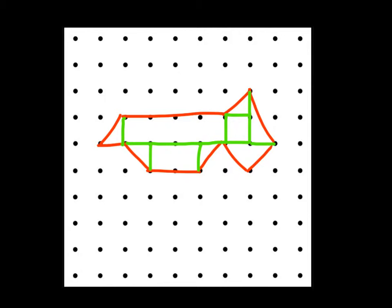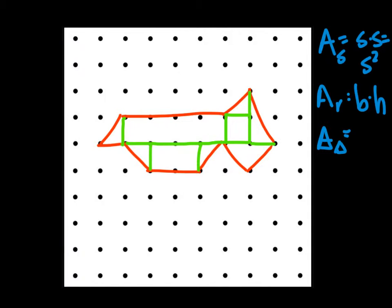So if we look at that, we can think of area equations. Area equations of squares is side length times side length or side length squared. Area equation of a rectangle is base times height. And area equation for a triangle is base times height divided by two.